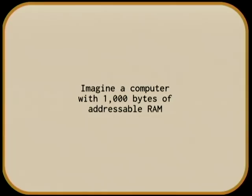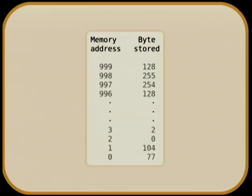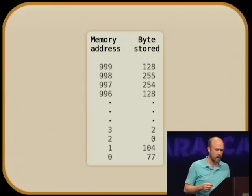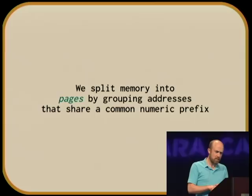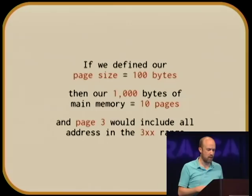Imagine a computer with a thousand bytes of accessible RAM, numbered 0 through 999, each storing a byte. We can split this memory into pages by grouping together addresses that share a common prefix.